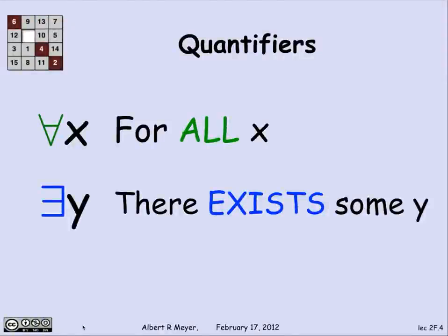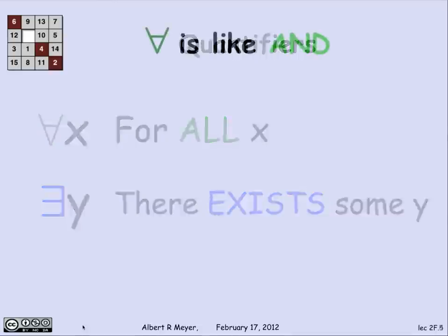Now, the quantifiers are read as for all and exists, but they control a variable. So I write upside down A x and read it as for all x. And backwards E y is read as there exists some y.